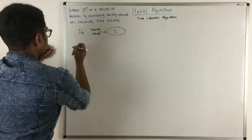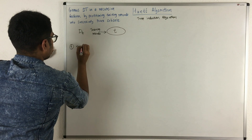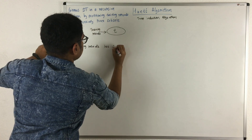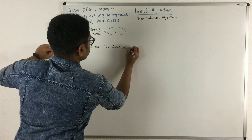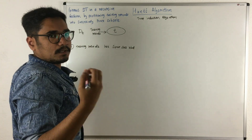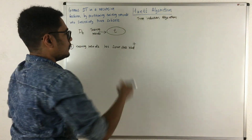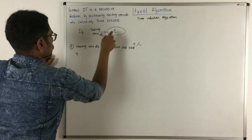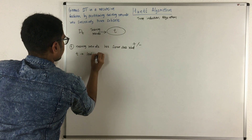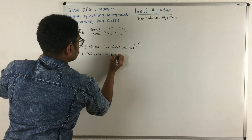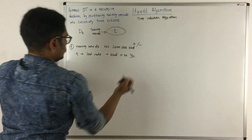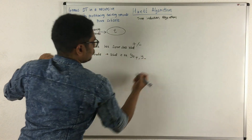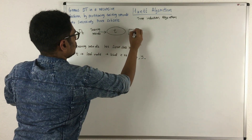What Hunt's algorithm says is that if your training record has the same class label — meaning all the records have a positive class label or all the records have a negative class label — then you change node t into a leaf node and label it as yt. If t is positive, you represent it as y-plus; if t is negative, you represent it as y-minus. So this becomes a leaf node.